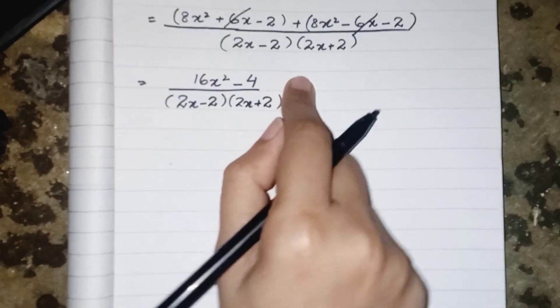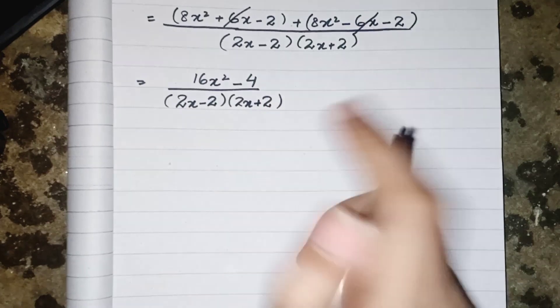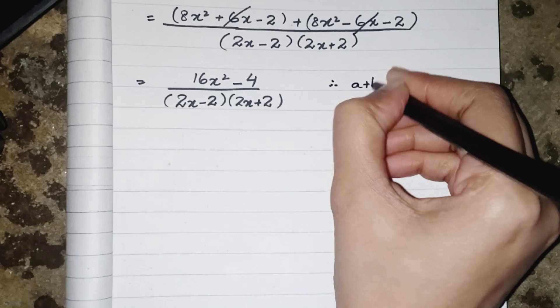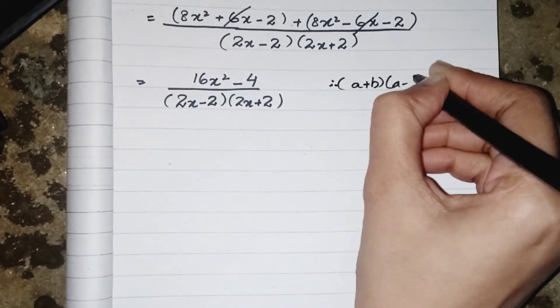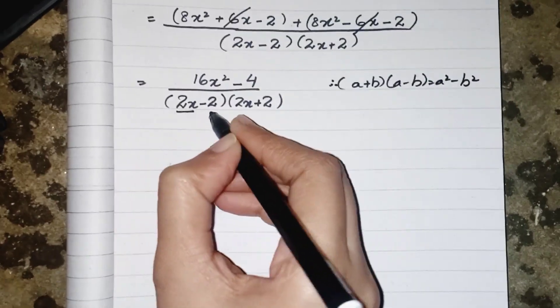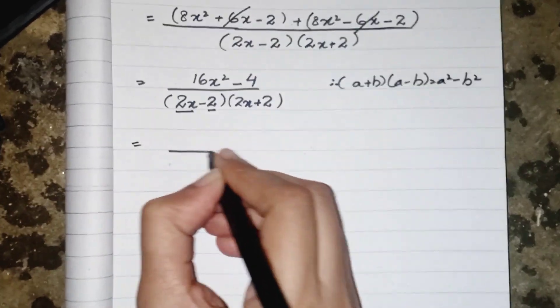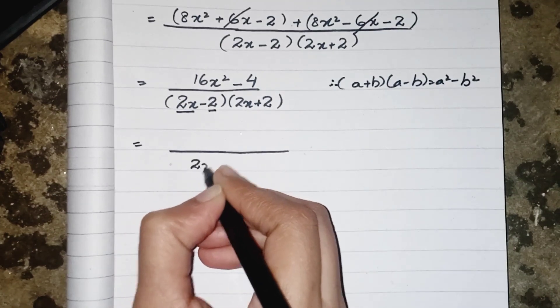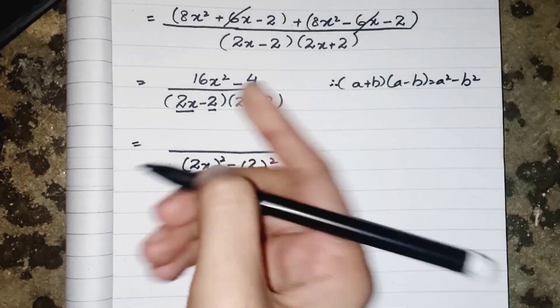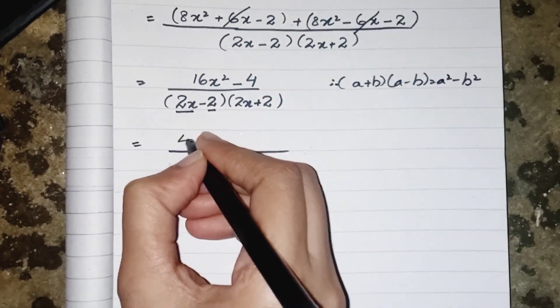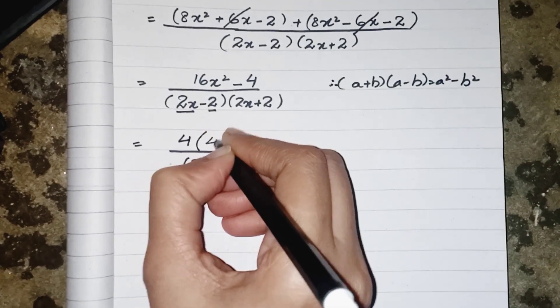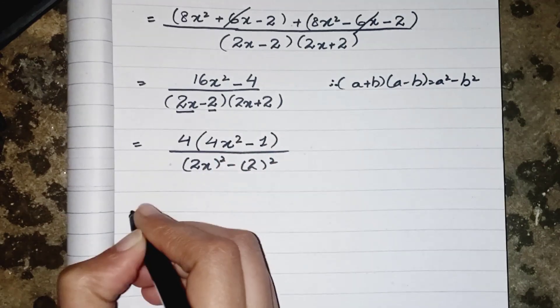Now once I finish doing work on my numerator, we can see our denominator which shows us that a plus b and a minus b should be equal to a square minus b square. So 2x is my a and 2 is my b. So we can write it like a square minus b square. In the numerator we have both numbers are multiples of 4. So we can take 4 as common. The remaining will be 4x squared minus 1.